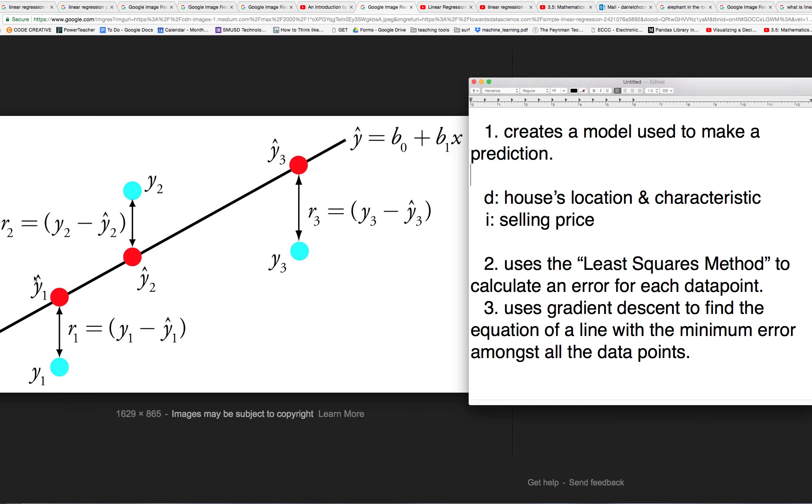And so the amount of error would be this space in between the point and the line that was created by the algorithm as the model. So then here's this other data point where maybe this grade down here is a D. And then this is the amount of error that is associated with the prediction. So this is what it actually is. And this is what the model would predict.